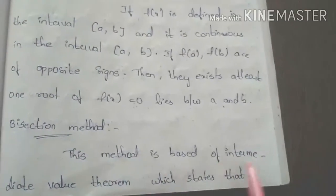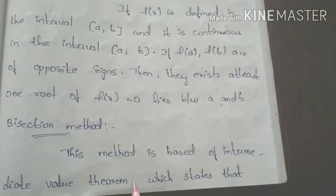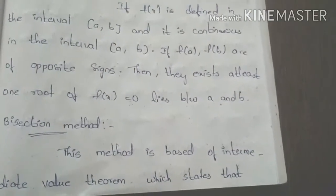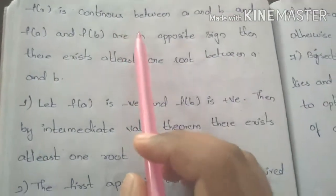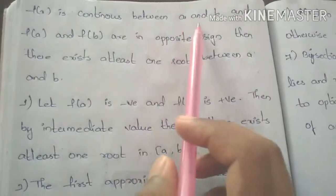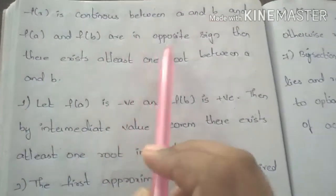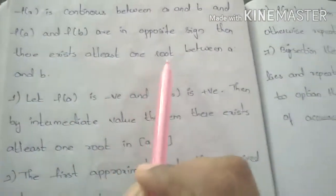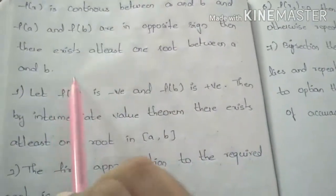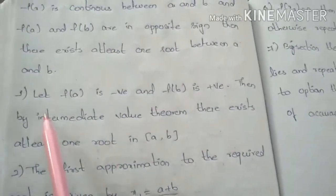This method is based on the intermediate value theorem, which states that if f of x is continuous between a and b, and f of a and f of b are of opposite sign, then there exists at least one root between a and b. Now let's proceed to the procedure.